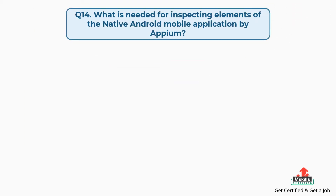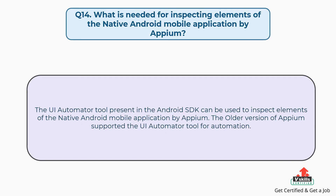Question number 14: What is needed for inspecting elements of the native Android mobile application by Appium? The UI Automator tool present in the Android SDK can be used to inspect elements of the native Android mobile application by Appium. The older version of Appium supported the UI Automator tool for automation.